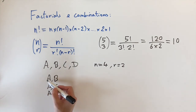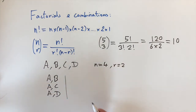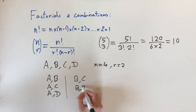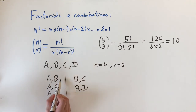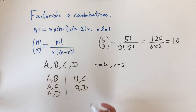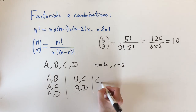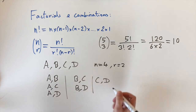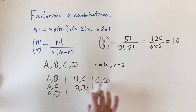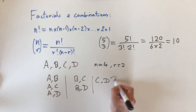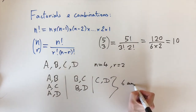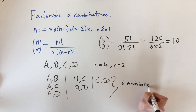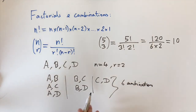Looking at pairs not including a: b and c, and b and d. We can't do b and a because we've already counted a and b — order doesn't matter here, we only care about what's chosen, not the ordering. Finally, there's c and d. We can't reuse c and b, c and a, leaving us with exactly six combinations total.